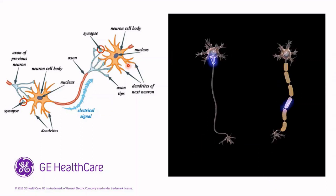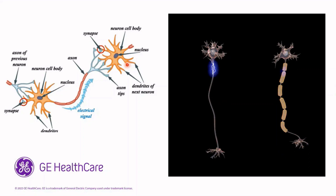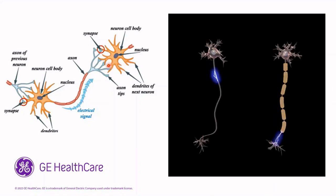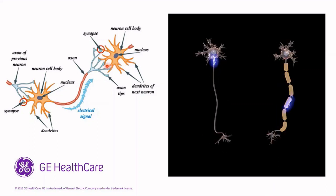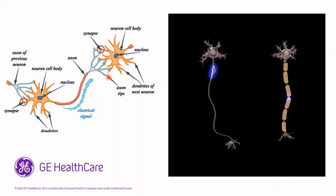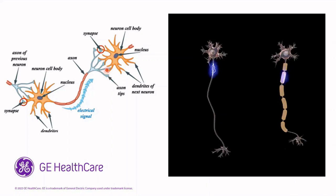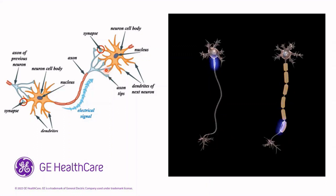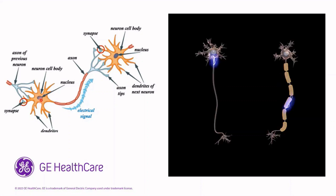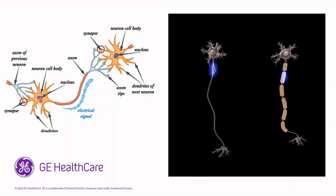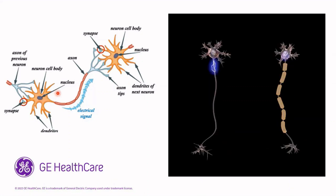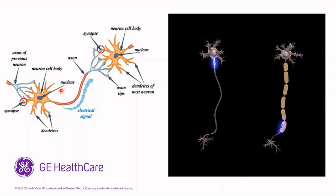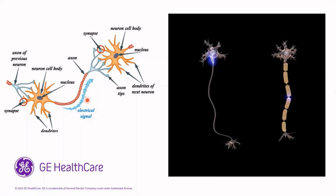For example, if one wants to move their hand, the signal is generated in the sensory motor areas of the brain, and then it gets propagated through the brain, through the spine, and to the hand, finger, toe, or wherever.